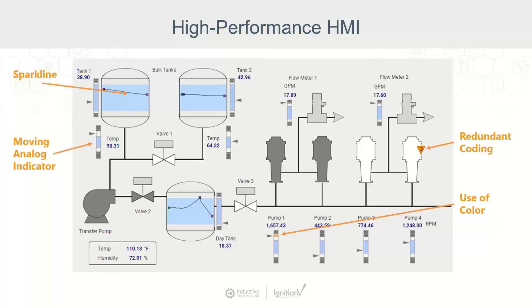We're using the moving analog indicator to quickly see if things are within range or not. The use of color is very important, not only with our indicators but with our alarm indicators as well. With the alarm indicator — shown here with the orange upside-down triangle — we're using redundant coding. That is the idea that I have an orange triangle, it's upside down, and it has the number three inside of it. A critical alert might be a square red box with a number one inside. Using redundant coding gives operators more context, and the more context we can provide operators, the better the application will be.